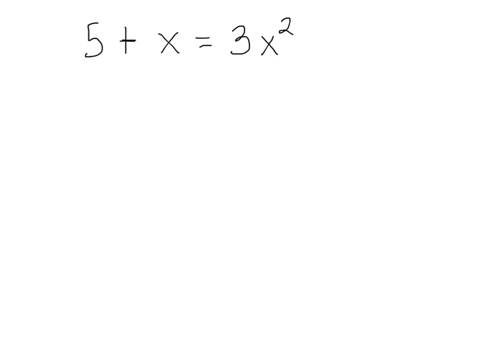Look at this one. Okay, now right here, the 3x squared is on the right, isn't it? There's two ways to do this. I could move the 5 and the x to the right. Or I could just move the 3x squared to the left. Why don't we do that?